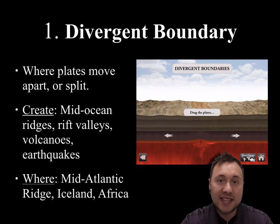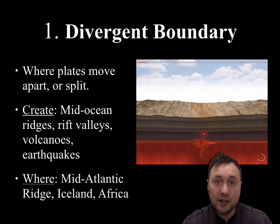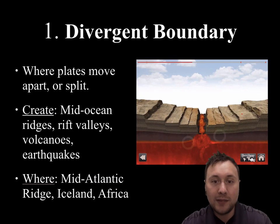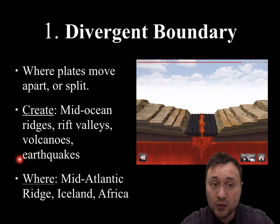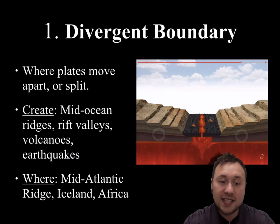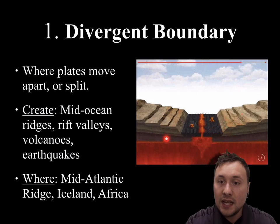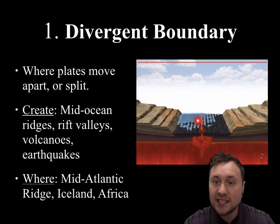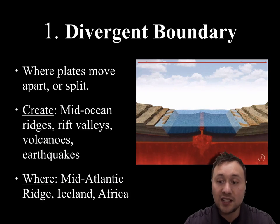First type: divergent boundary. A divergent boundary is where plates move apart or split — they're diverging. The landforms they create include mid-ocean ridges, rift valleys, volcanoes, and earthquakes. In this animation you can see a lava fissure like they have in Iceland — right now it's splitting as a rift valley, but it will fill with water and become an ocean. The Atlantic Ocean is a great example. Examples include the mid-Atlantic ridge, Iceland, and Africa.